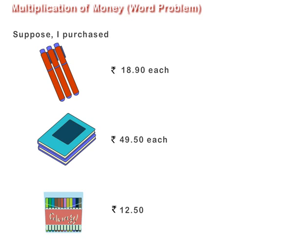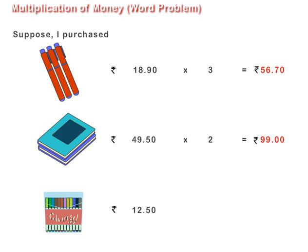What amount did I get back? First, multiply Rs. 18.90 by 3 to find the cost of 3 pens. Then, multiply Rs. 49.50 by 2 to find the cost of 2 books.